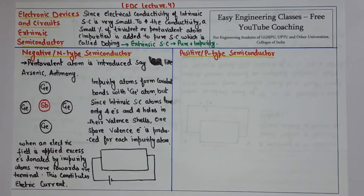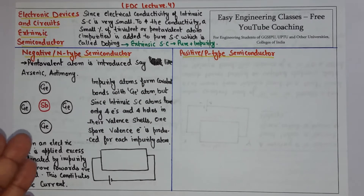Let's start with n-type semiconductor. In an n-type semiconductor, we add a small amount of a pentavalent atom, like arsenic or antimony.